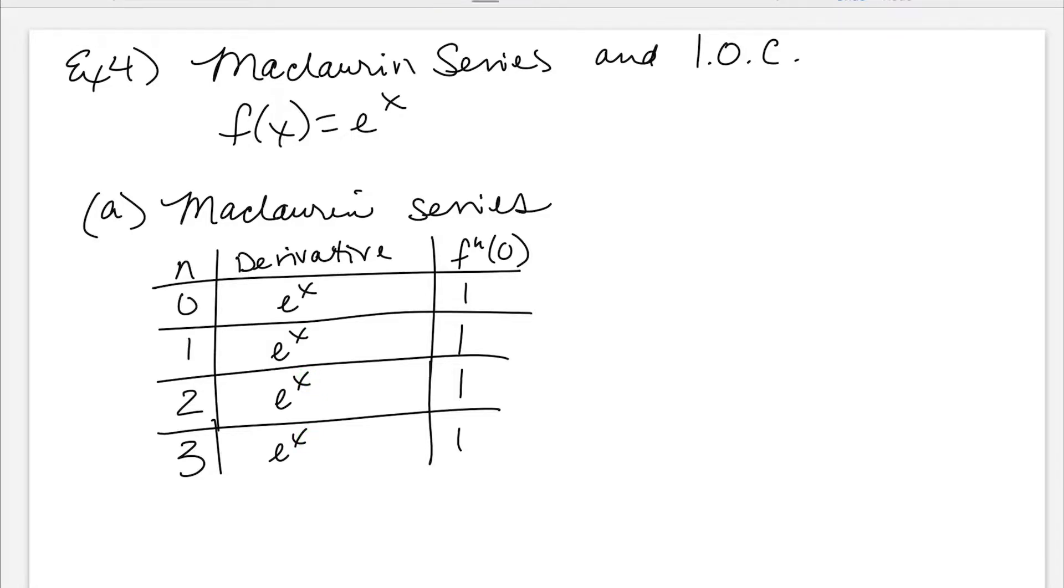This is Maclaurin, so I know my a equals zero. So I now have one plus one over one factorial times x, plus one over two factorial times x squared, plus one over three factorial times x cubed, et cetera. So this is nice and easy, right?